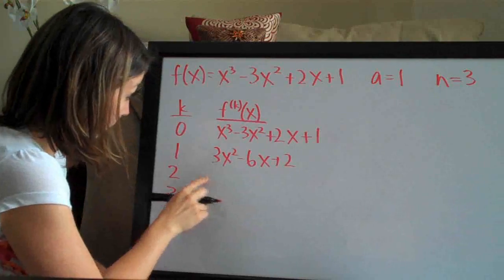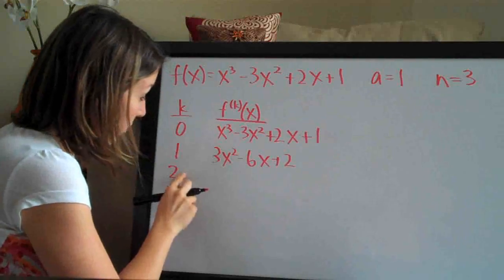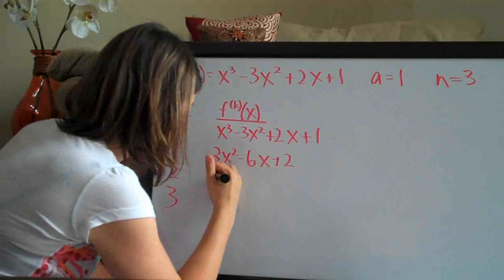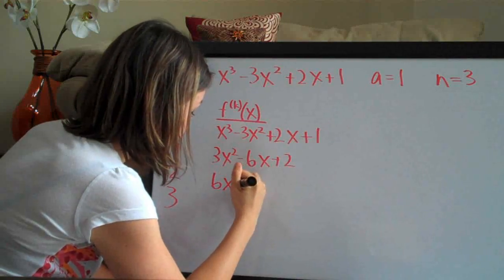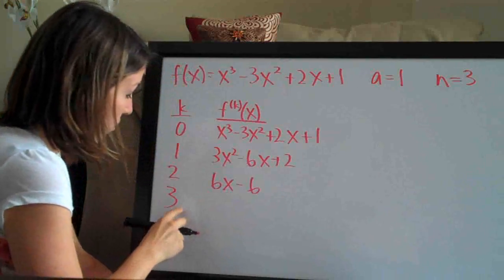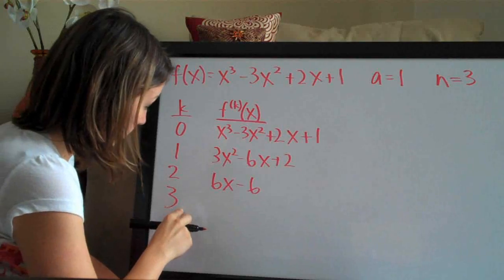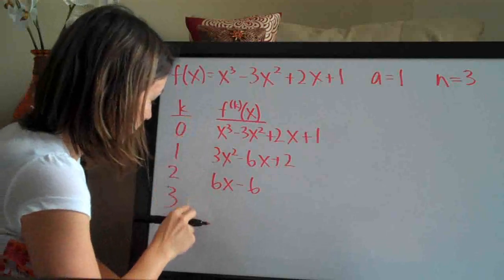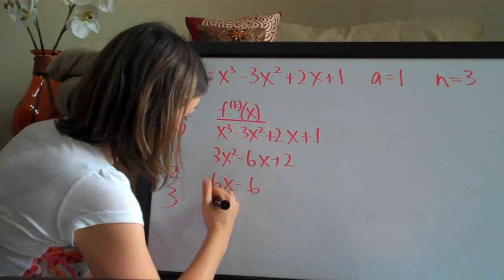Then we go ahead and take the derivative again to correspond here with 2. So we get 6x minus 6, and then once more the derivative here for k at 3, and it's just 6.